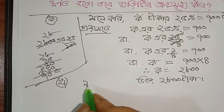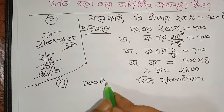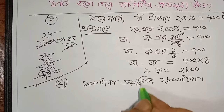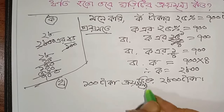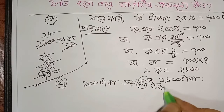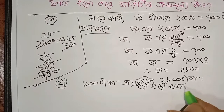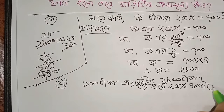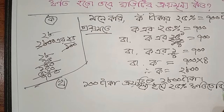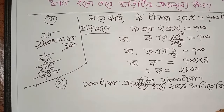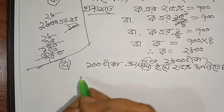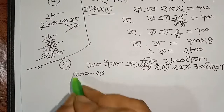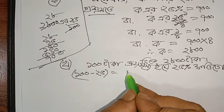প্রথমে এই x সমান 0, 35% খোতি। বিক্রয় মূল্লো - তো একেন আমরা একশো থেকে বিয়োগ দেবো, লাভ হলে যোগ করি তো এটা বিয়োগ করে।